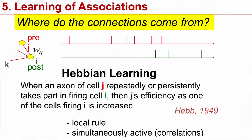If the neuron J, which is also called the pre-synaptic neuron because it sits before the synapse, repeatedly or persistently takes part in firing cell I, which is called the post-synaptic neuron because it sits after the synapse, then the efficiency of J driving I is increased, which means the weight is increased.